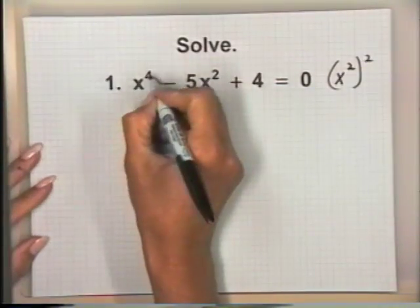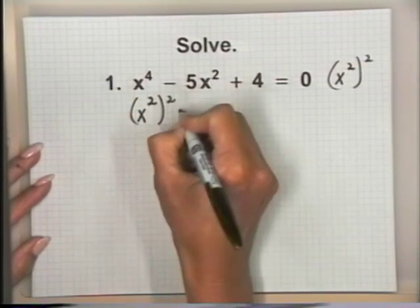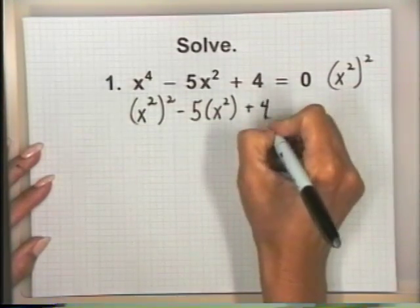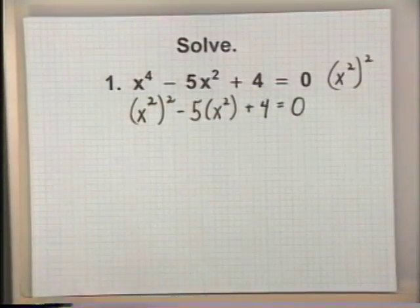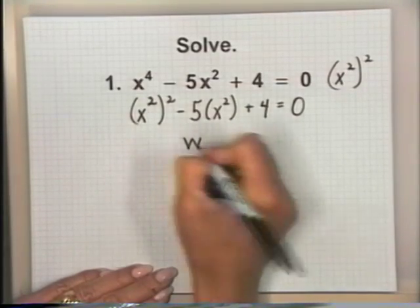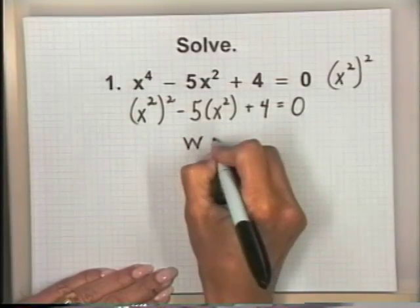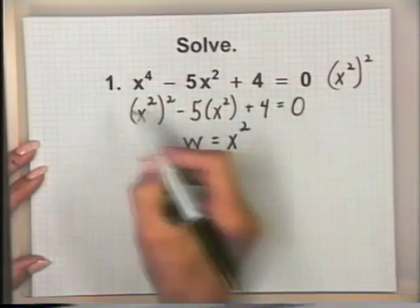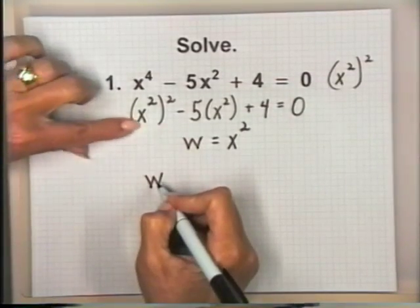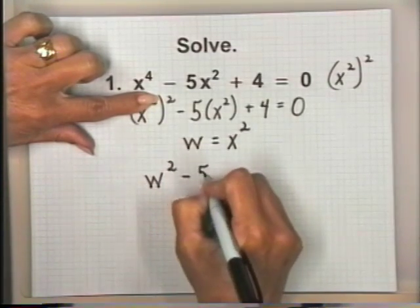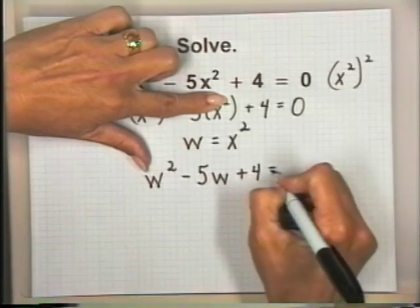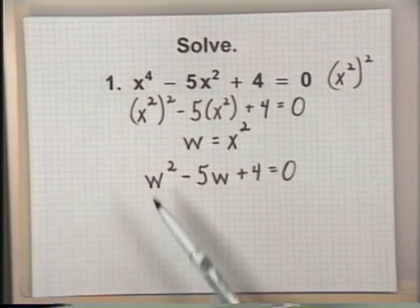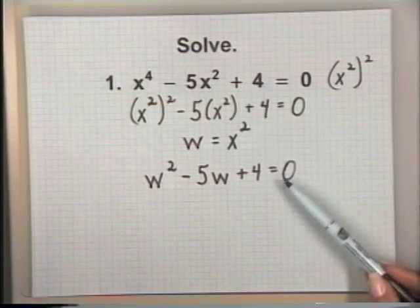Let's rewrite this. We know x to the fourth is x squared squared, minus 5 times x squared in parentheses, plus 4 equals 0. Now let's write our substitution: w equals x squared. It's very important each time that we write down our substitution variable. We replace x squared with w, giving us w squared minus 5w plus 4 equals 0. This resulting equation is quadratic, written in standard form with the quadratic term, then the linear term, then the constant equal to zero.